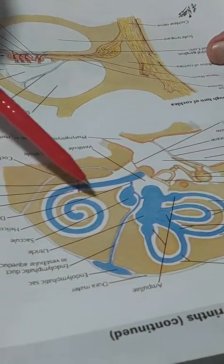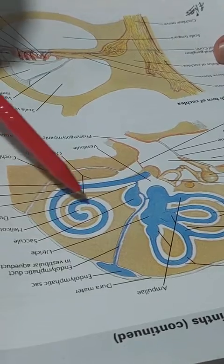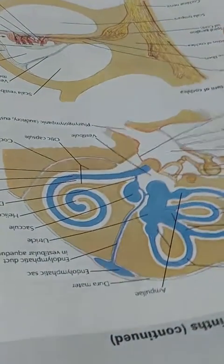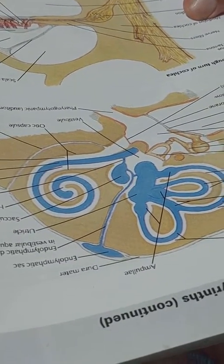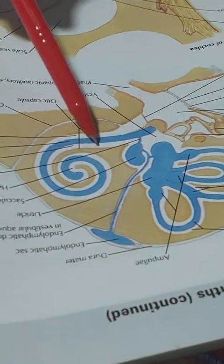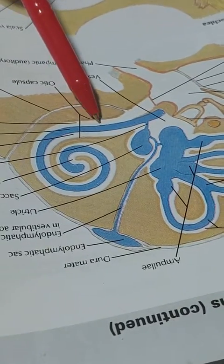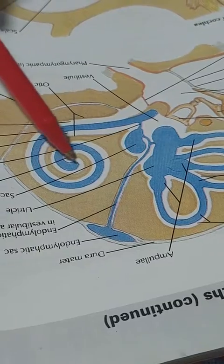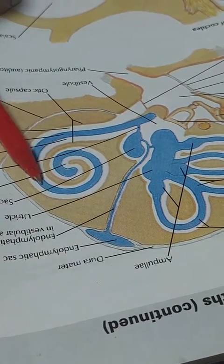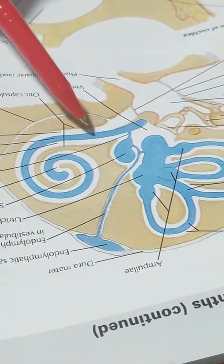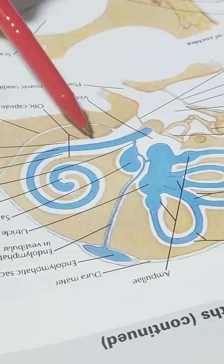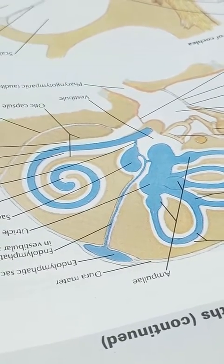This whole membranous labyrinth — cochlear duct, utricle, saccule and semicircular duct — all contains the endolymph. While the bony labyrinth contains the perilymph. This membranous duct is embedded inside the bony labyrinth and surrounded by the perilymph.